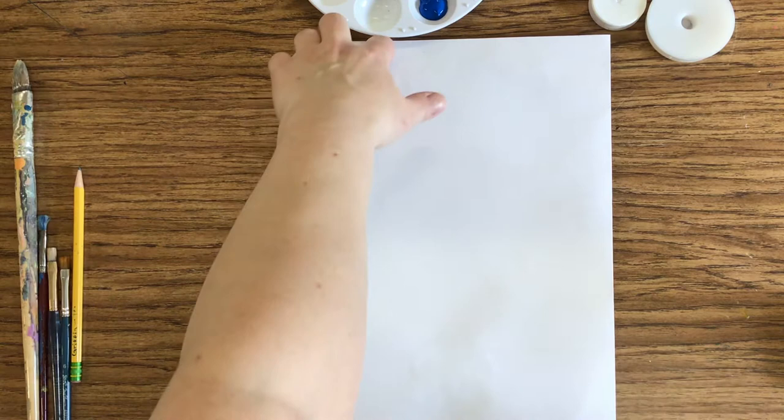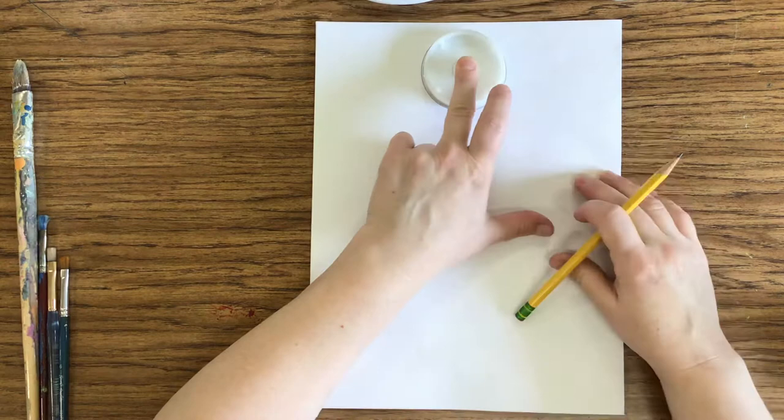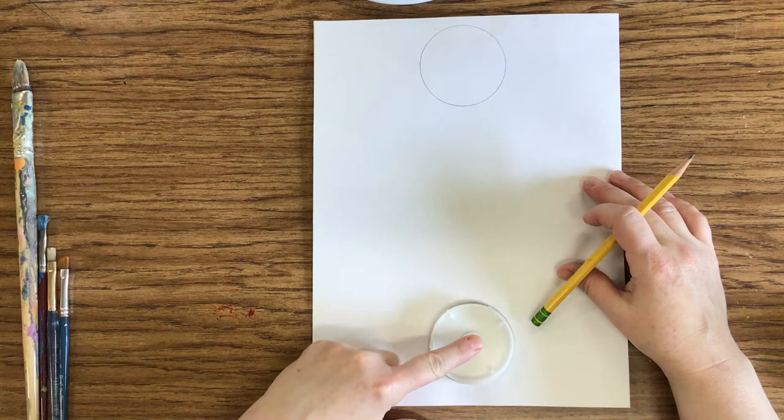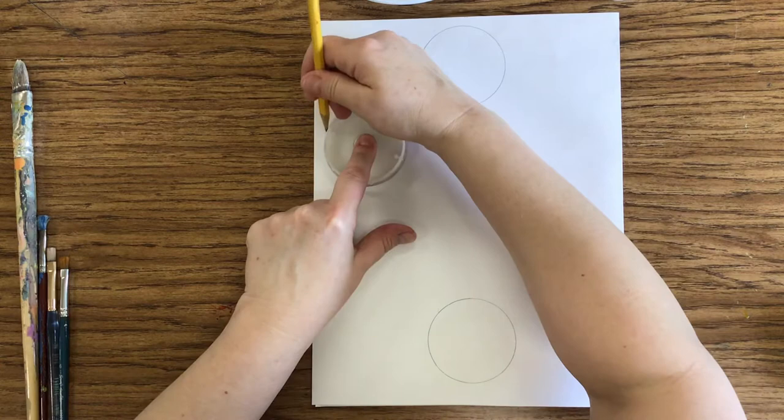Let me scoot this up so you can see it. I'm going to take my largest circle that I have and put one at the very top and trace around it. I would do it in pencil that way if you mess up you can erase it. You're going to come to the very bottom and put one directly below the one that you did at the top.